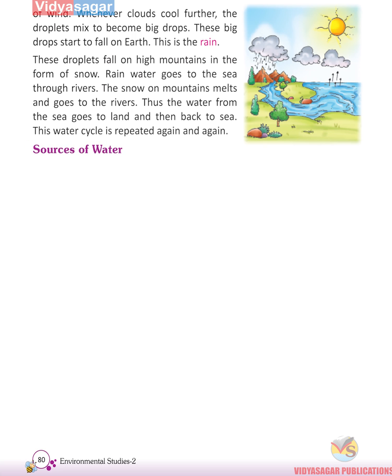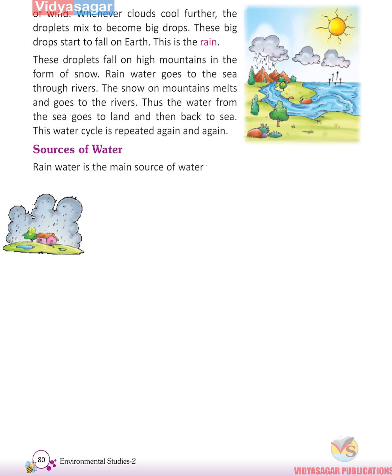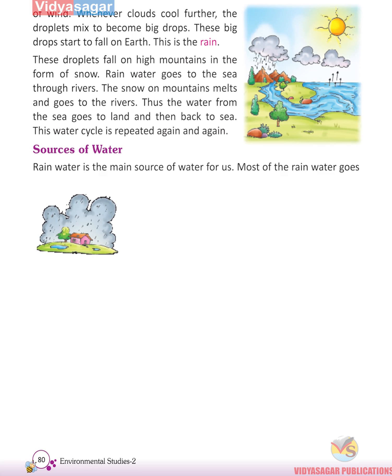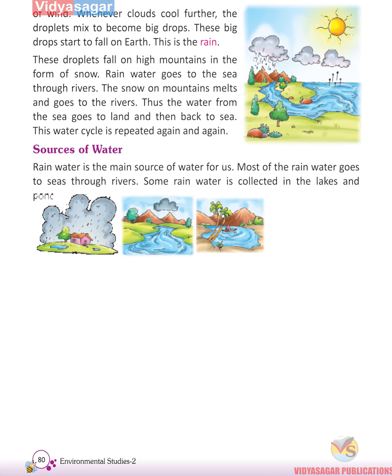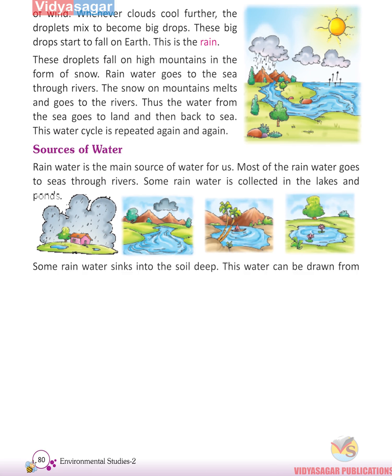Sources of Water: Rain water is the main source of water for us. Most rain water goes to seas through rivers. Some is collected in lakes and ponds, and some sinks deep into the soil and can be drawn from wells, tube wells, and pumps.